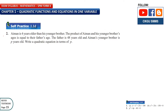Now let's look at question two. Ayman is four years older than his younger brother. So we have two people: Ayman and his younger brother. The product of Ayman and his younger brother's ages is equal to their father's age. The father is 48 years old, and Ayman's younger brother is P years old. We need to write a quadratic equation in terms of P.